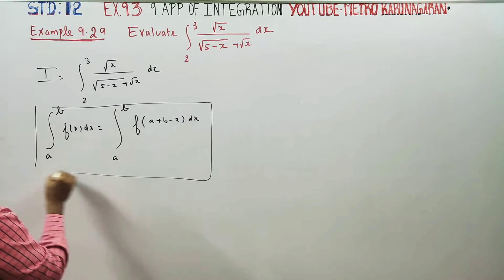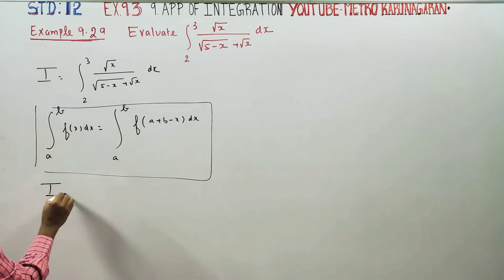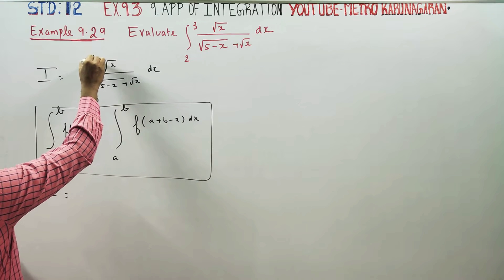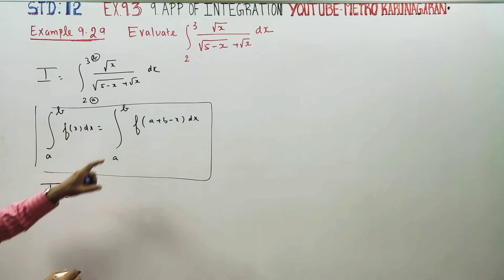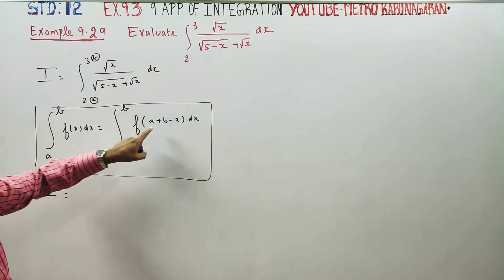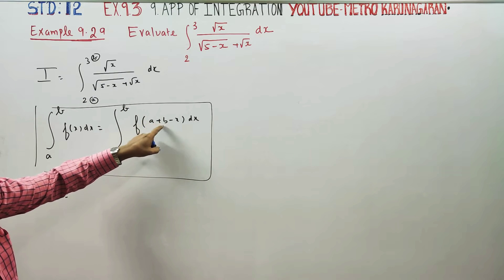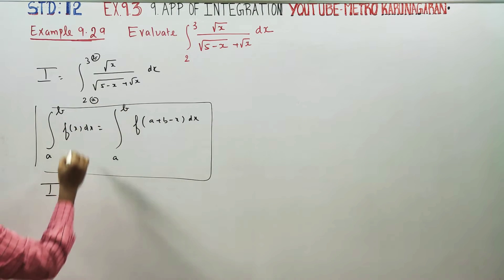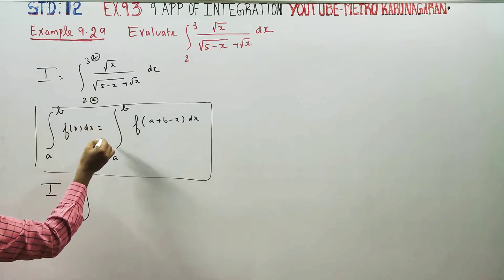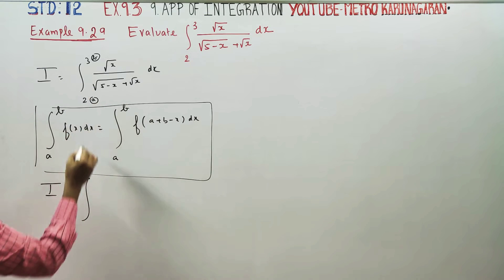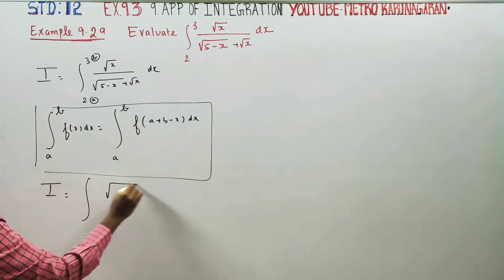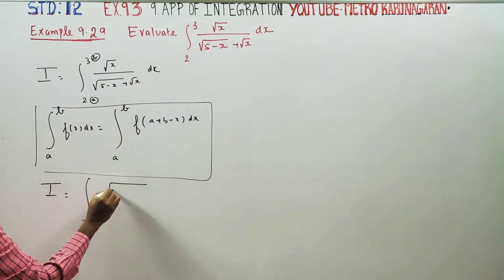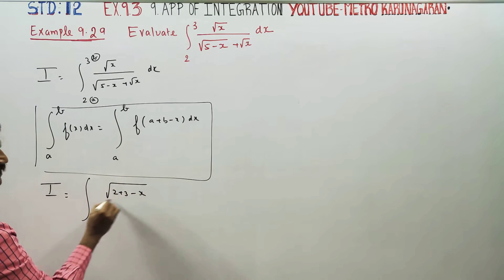Using this property, I is equal to the same integral. This is my a, this is my b. Looking at x, I replace x with lower limit plus upper limit minus x, that is 2 plus 3 minus x, which equals 5 minus x.